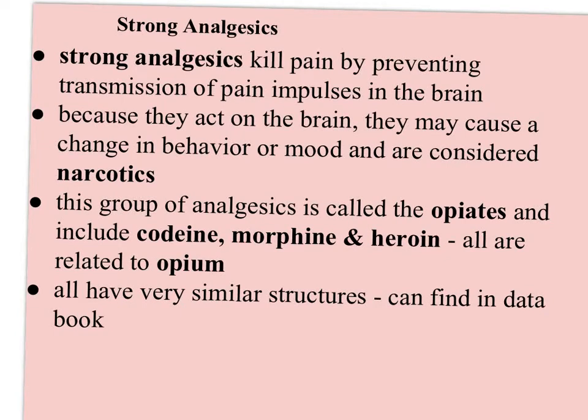In this video I'm going to talk about section 15.3 on the opiates, also known as the strong analgesics. An analgesic is a painkiller — the mild ones work by preventing transmission of pain impulses to the brain, but a strong analgesic kills pain by preventing transmission of pain impulses within the brain. They act on the brain, which means they may cause changes in behavior or mood, making them considered a narcotic. This group includes codeine, morphine, and heroin, all related to opium derivatives.